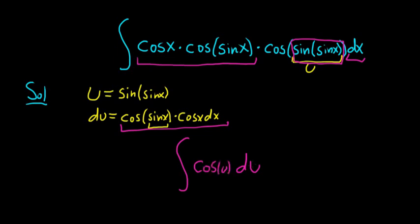To integrate cosine we simply ask what's a function whose derivative is cosine. Well sine. So this is sine of u plus c.